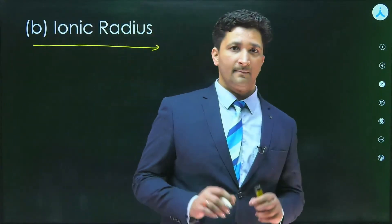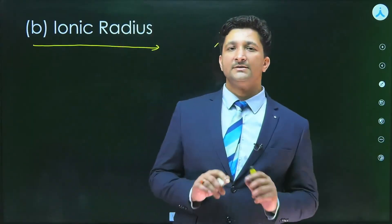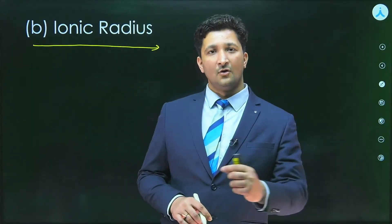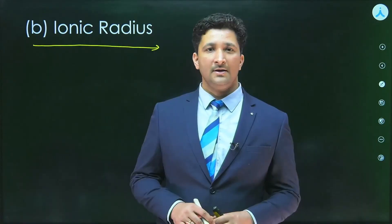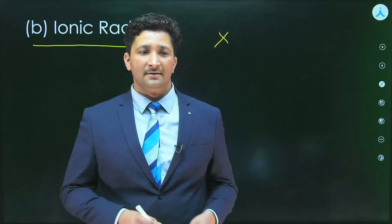Now let us talk about ionic radius. Suppose X is an atom and it can form ions in two ways. Either it can gain electrons or lose electrons. And it can gain many electrons and it can lose many electrons.